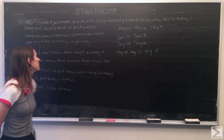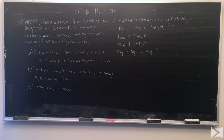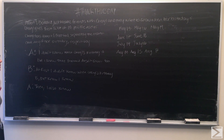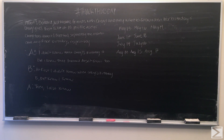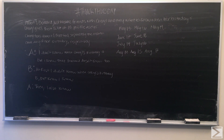The problem is: Albert and Bernard just became friends with Cheryl and they want to know when her birthday is. Cheryl gives them a list of ten possible dates: May 15th, May 16th, May 19th, June 17th, June 18th, July 14th, July 16th, August 14th, August 15th, and August 17th. Cheryl then tells Albert and Bernard separately the month and day of her birthday respectively — she tells Albert the month and Bernard the day. From their responses, we're supposed to determine when Cheryl's birthday is.